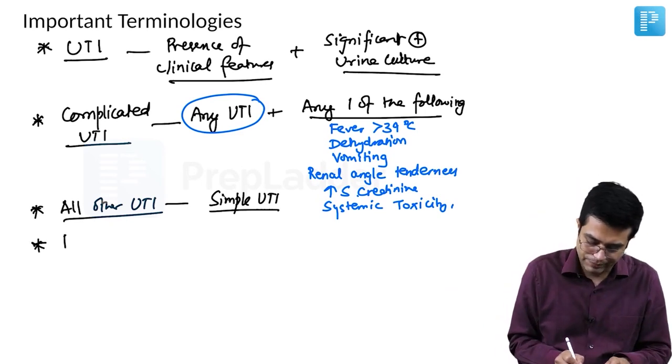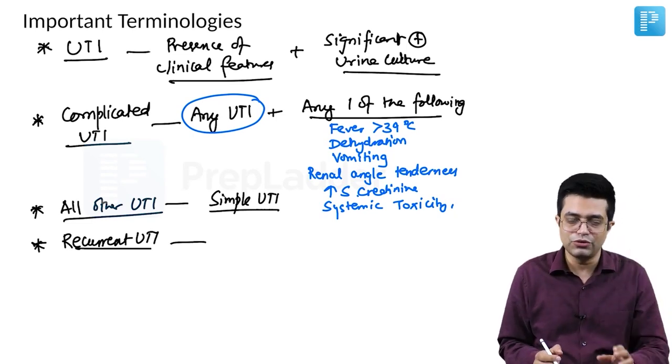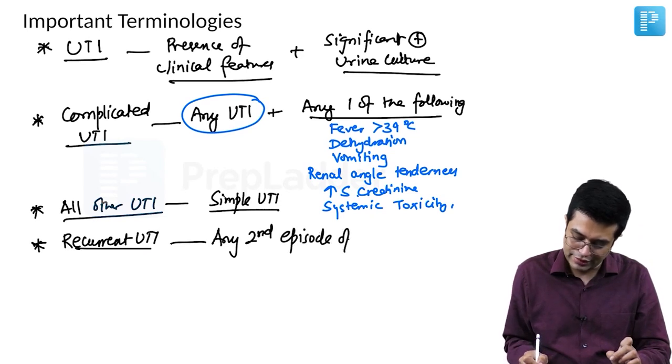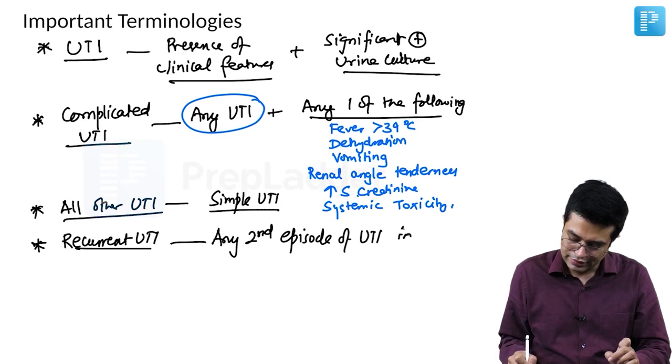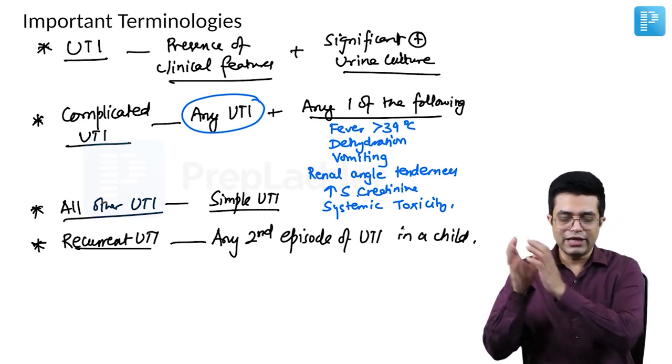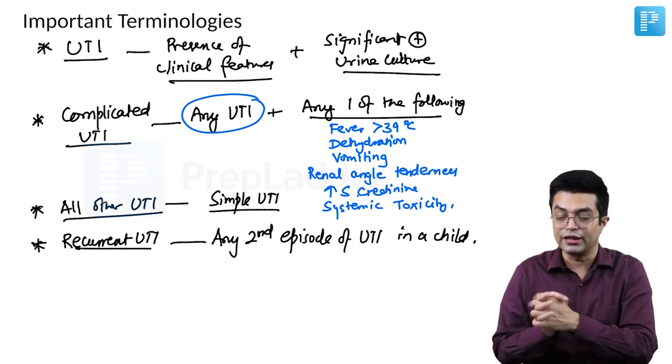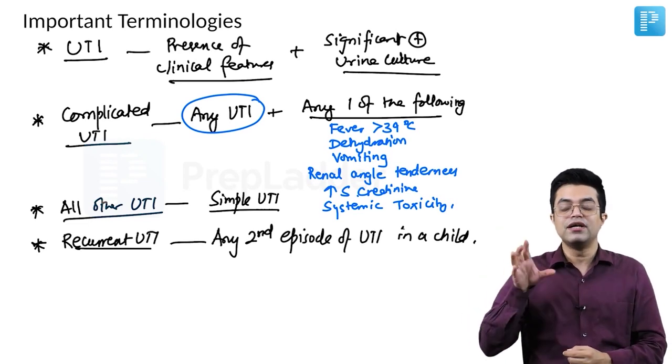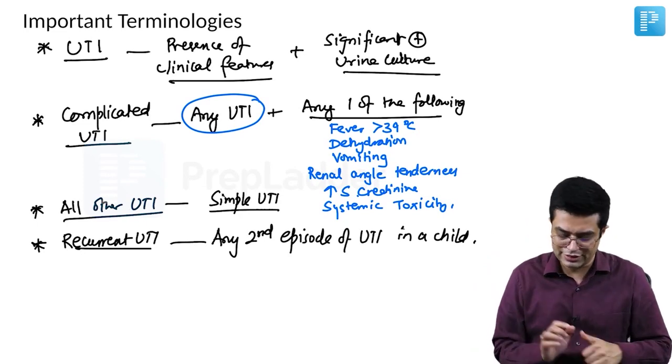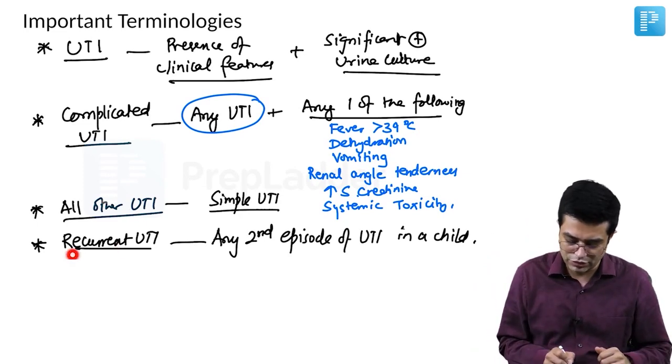And what is recurrent UTI? Recurrent UTI is very simple. You don't need to have multiple UTIs. Any second episode of UTI in a child is called as recurrent UTI. So suppose there is a child who got first UTI at seven months of age, then at five years of age, the child gets another UTI. Now he will be labeled as having recurrent UTI because two episodes have happened irrespective of the time period. This is a very important thing that you need to remember.